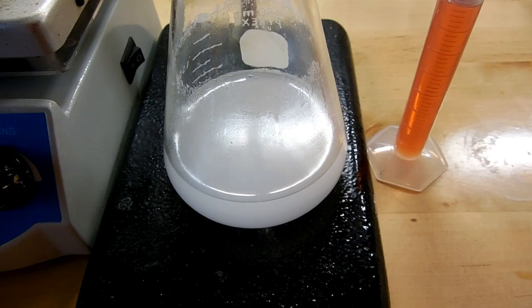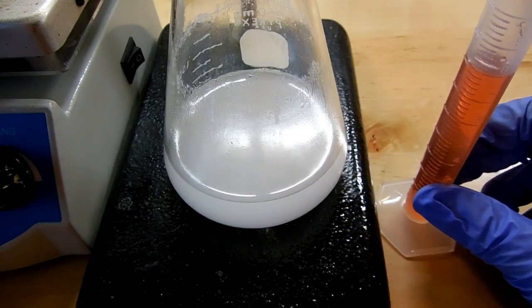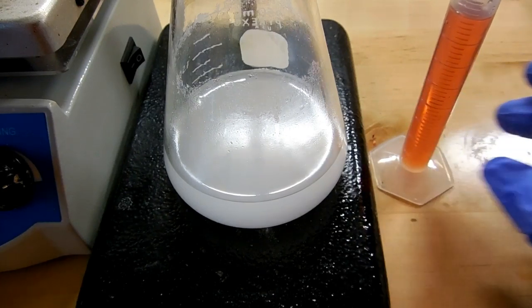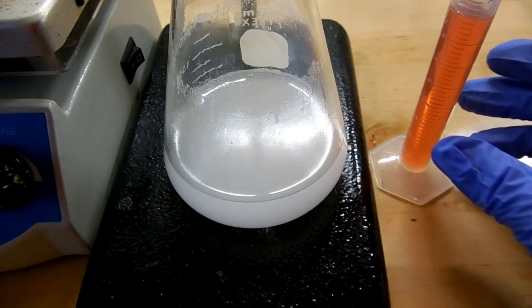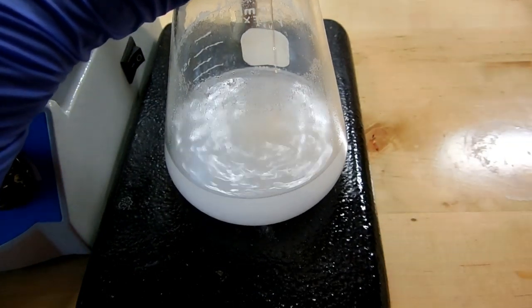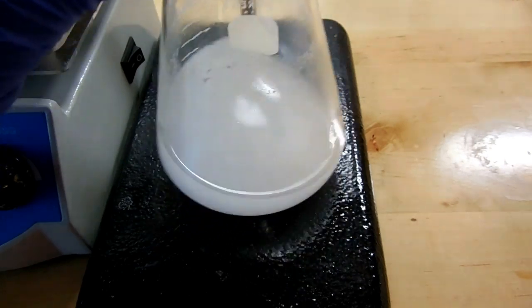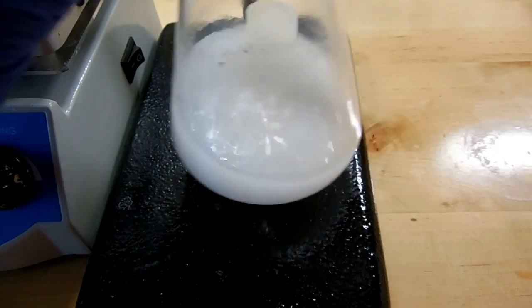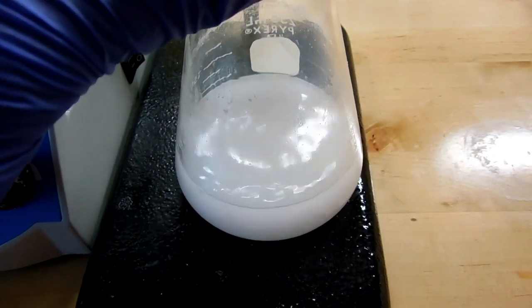Now we need to add a catalyst to help the reaction along and that is concentrated sulfuric acid. I will add 8 milliliters of that to the reaction flask very slowly because it produces quite a bit of heat. So I'll add just a little bit at a time, swirl to mix and add a little bit more.